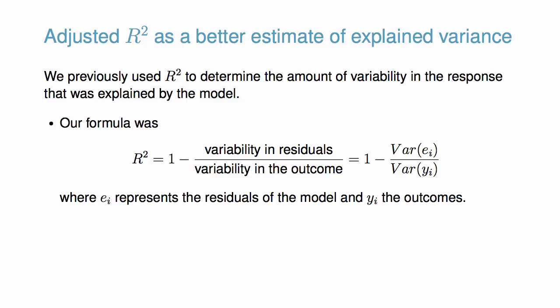The regular R-squared is actually a biased estimate of the amount of variability estimated by the model. To get a better estimate, we use the adjusted R-squared.